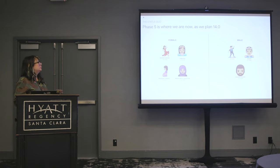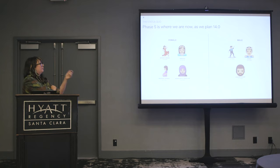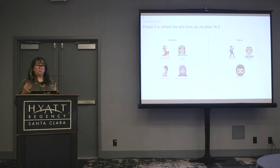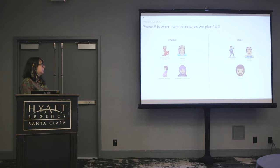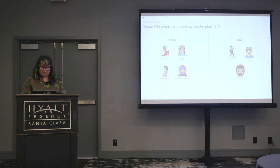So what do we do for phase five — for Unicode 14.0? We're still strategizing. We're trying to figure out what is the right path forward. We're now left with: woman dancing, princess, pregnant woman, woman with headscarf, man dancing, prince, and bearded person.